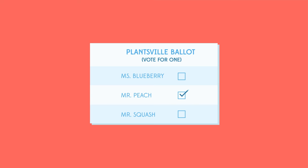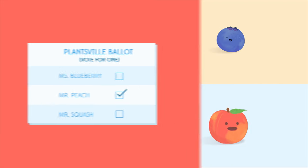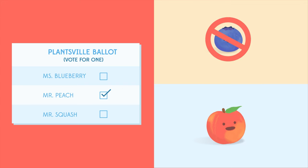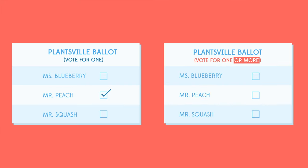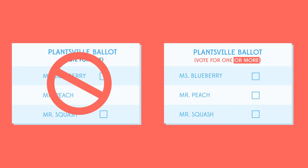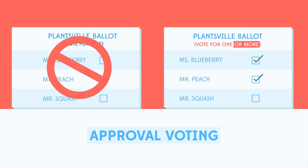Peach's supporters also liked Blueberry, but couldn't say so on their ballots. A simple solution is to change the ballot from 'vote for one' to 'vote for one or more,' allowing everyone to state all the candidates they support. This is called approval voting.